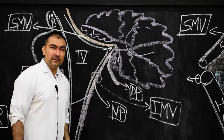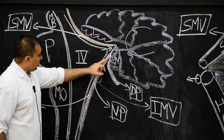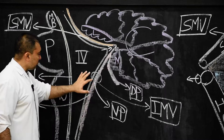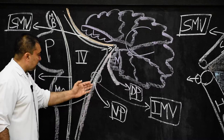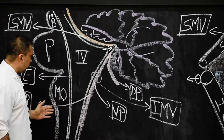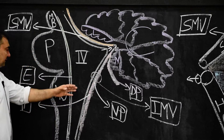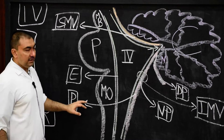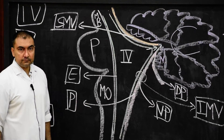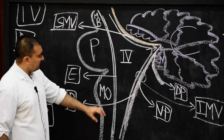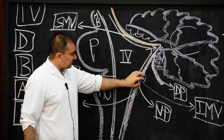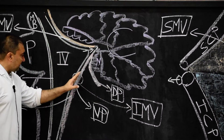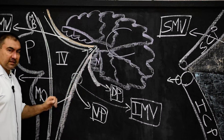What about the ventral? The ventral layer of pia matter will continue down — it will join with the ependyma and form the inferior medullary velum. Therefore, this inferior medullary velum is formed by the ependyma and the ventral layer of pia matter.